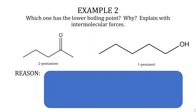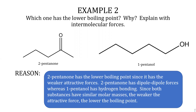Example two: which one has the lower boiling point and why? The substances are 2-pentanone and 1-pentanol. 2-Pentanone has the lower boiling point since it has the weaker attractive forces. 2-Pentanone has dipole-dipole forces whereas 1-pentanol has hydrogen bonding. Since both substances have similar molar masses, the weaker the attractive force, the lower the boiling point.